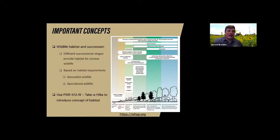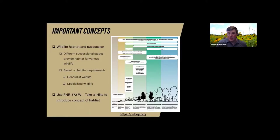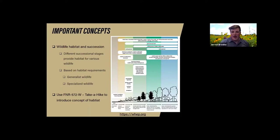Now that we understand succession and disturbance, we need to figure out how that relates to wildlife habitat. This chart shows how different successional stages provide habitat for various wildlife species based on their requirements. Earlier successional stages with annual grasses, forbs, or bare ground provide good habitat for species like the spotted sandpiper or mourning dove, whereas later successional stages — forest — provide habitat for eastern gray squirrels, fishers, Indiana bats, and ovenbirds. Some species are generalists found in most successional stages; in Indiana, whitetail deer is a prime example.